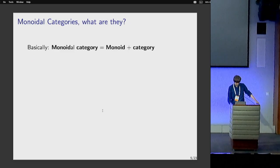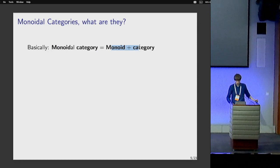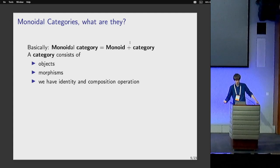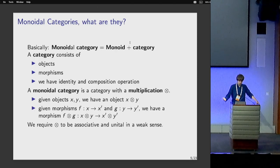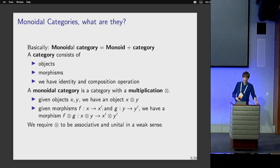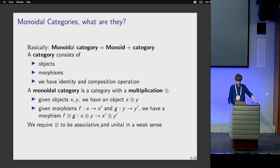What are monoidal categories? Looking at the word, we see 'monoid' and 'category'. Basically, it's what you get when you take the concepts of monoid and category and put them together. A category has objects, morphisms, identity, and composition. The key thing from a monoid is the multiplication — so a monoidal category has a suitable multiplication operation, giving us a tensor of two objects and of morphisms, along with laws for associativity and unitality in a weak sense.